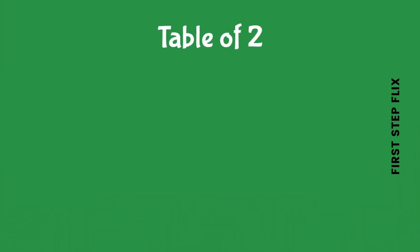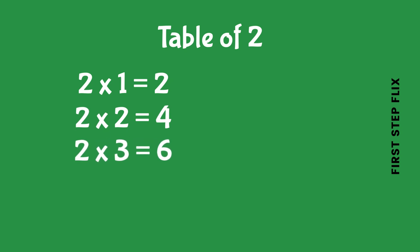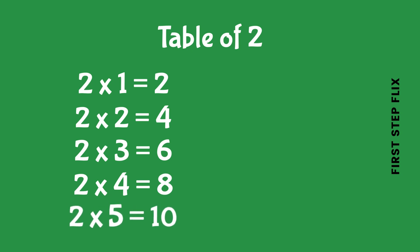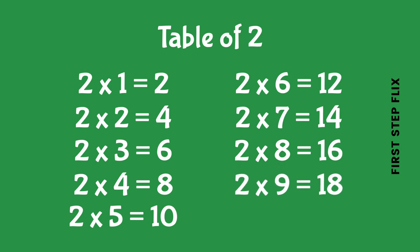Let's repeat. 2 ones are 2, 2 twos are 4, 2 threes are 6, 2 fours are 8, 2 fives are 10, 2 sixes are 12, 2 sevens are 14, 2 eights are 16, 2 nines are 18, 2 tens are 20.